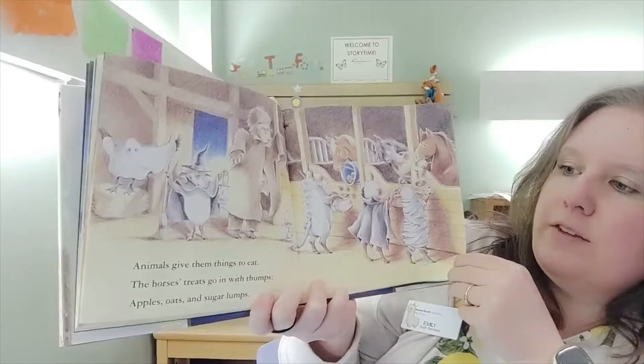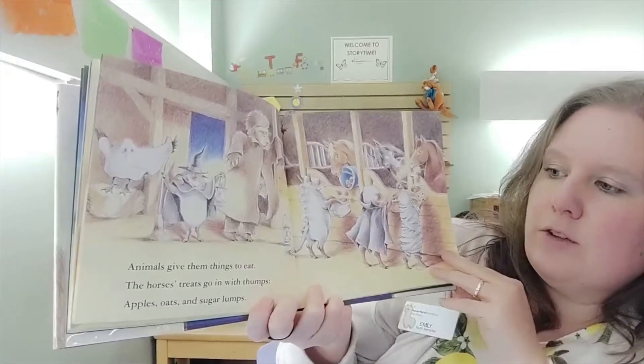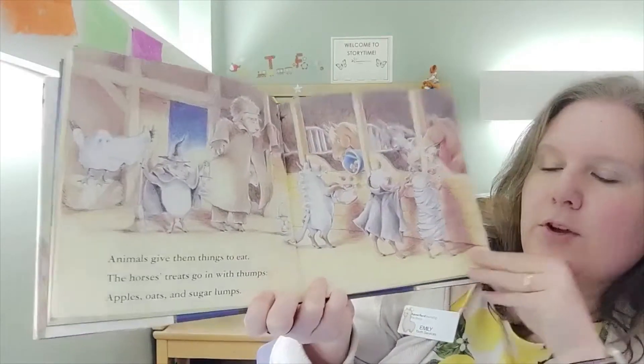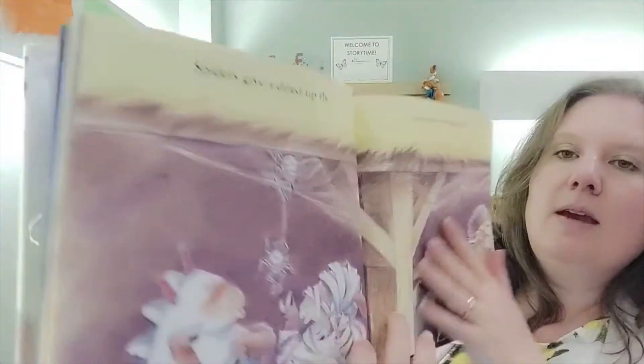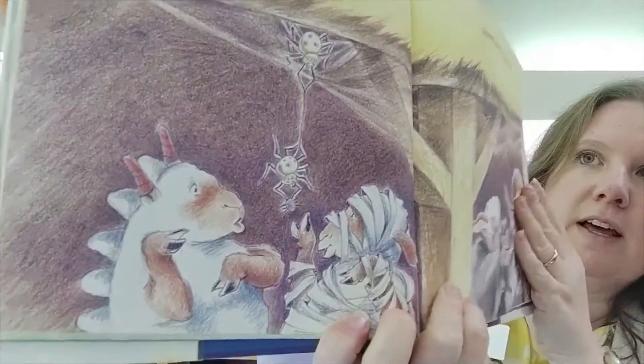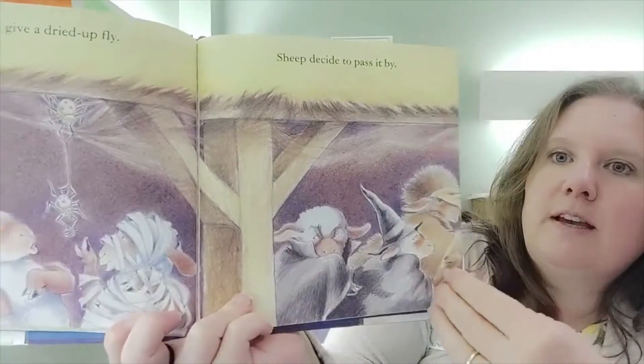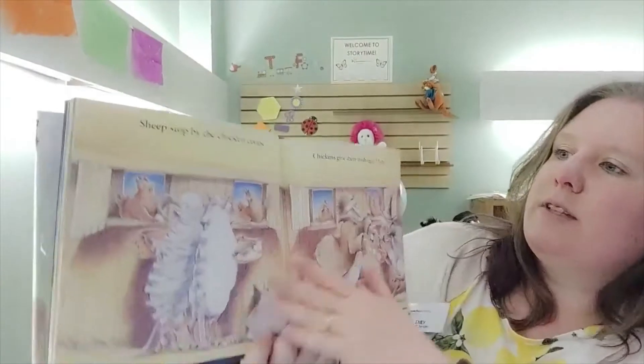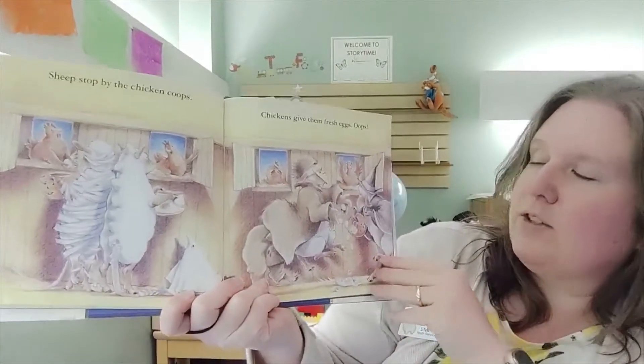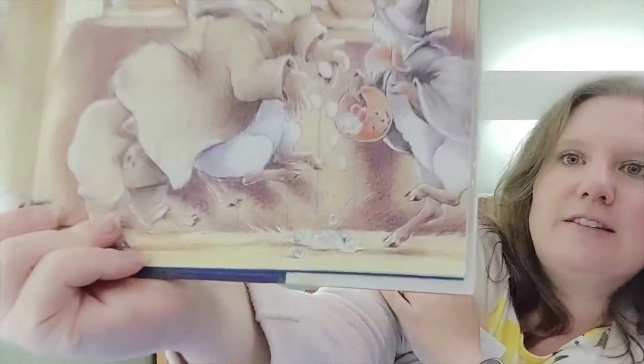Sheep bleat trick-or-treat! Animals give them things to eat. The horses' treats go in with thumps: apples, oats and sugar lumps. Spiders give a dried up fly. Sheep decide to pass it by.